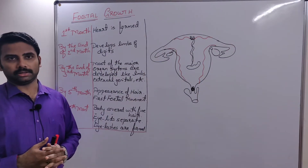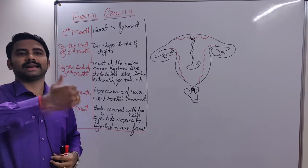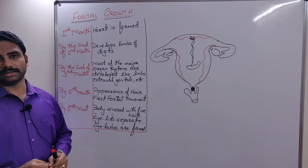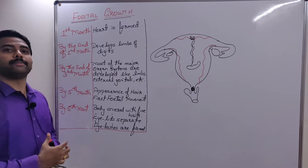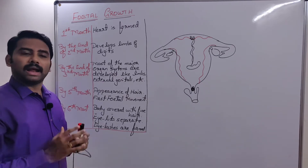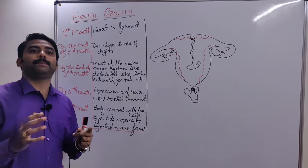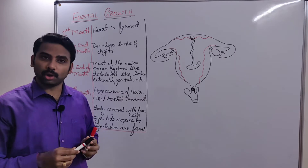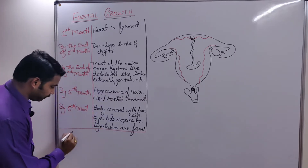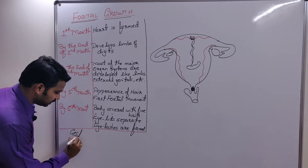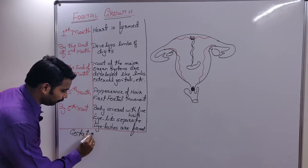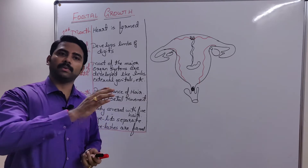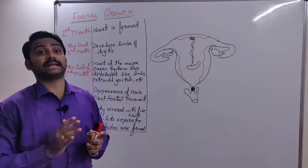Once implantation occurs and the implanted site gradually converts to placenta, the female is pregnant and the embryo starts growing in the mother's womb, remaining there for a period of nine months. That nine-month period of pregnancy is called the gestation period. The nine-month gestation period in humans can be divided into three trimesters.